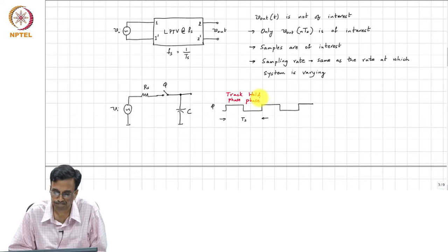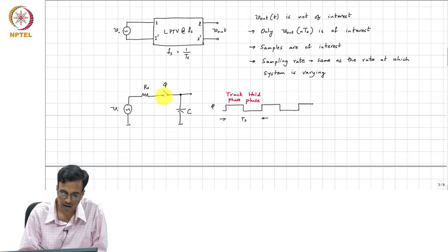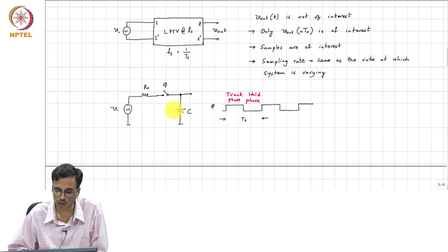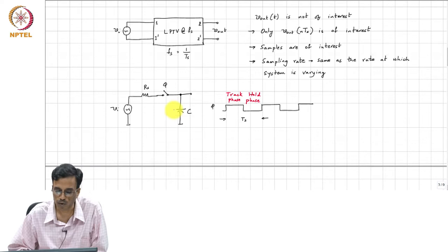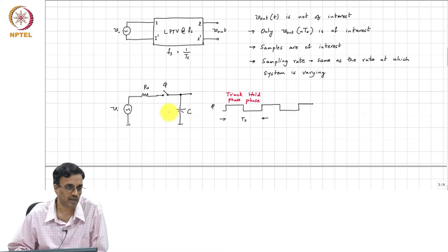And during the track phase, the input source is connected to the capacitor. And through the output impedance of the source or the R_s can also model the switch resistance. The capacitor attempts to charge towards V_i. But of course, there will always be some voltage drop across the switch because there is some capacitor current flowing and that will cause a drop across the switch.